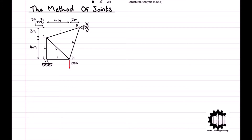Similarly to the method of sections, our first step is to calculate the reaction forces at the supports. Assuming senses for the support reaction forces, we have a horizontal and vertical force at the hinge support and only a horizontal force at the roller support. Applying the conditions of equilibrium — sum of horizontal forces equals zero, sum of vertical forces equals zero, and sum of moments relative to node A equals zero — we can calculate the reaction forces.